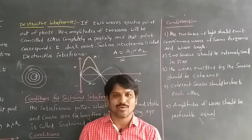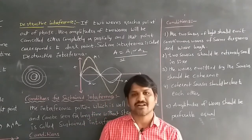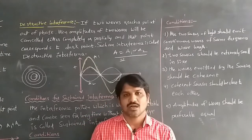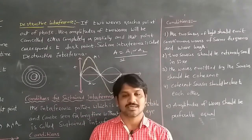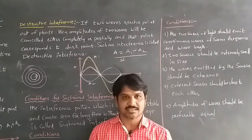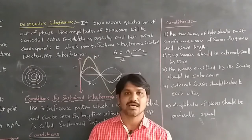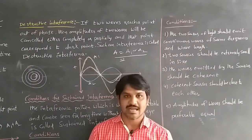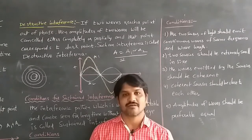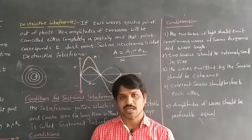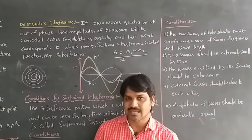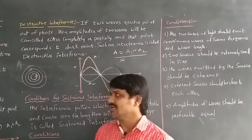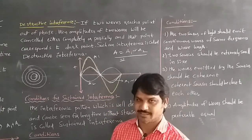This is about interference. Next we are going to discuss about what are coherent sources, incoherent sources, and the qualitative analysis of interference — the mathematical part of interference.